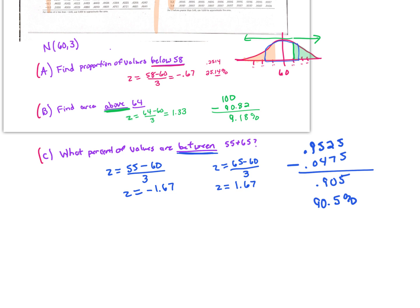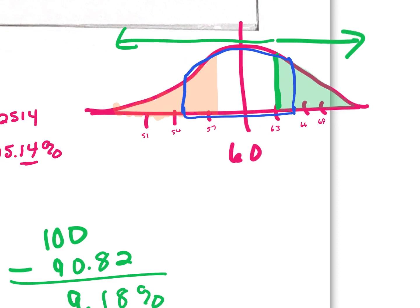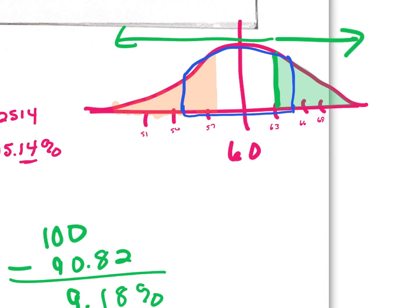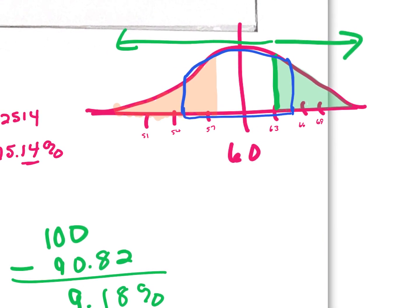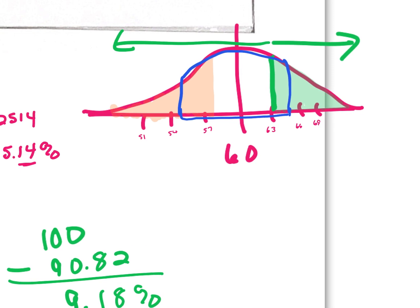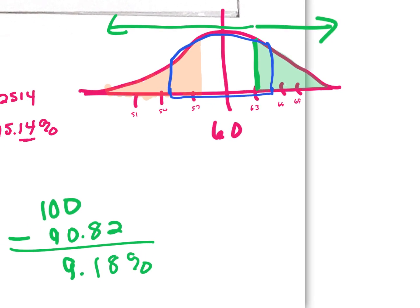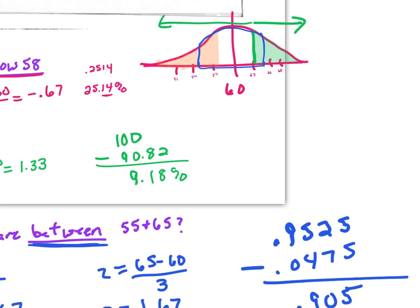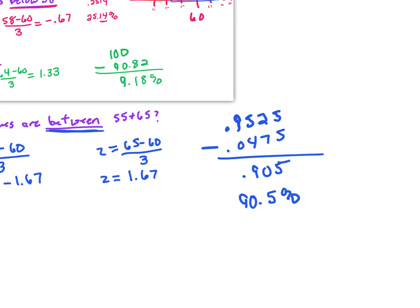That gives us 0.905, or 90.5%. That should make sense — we are almost two standard deviations above and below the mean, and through the empirical rule we know that would be approximately 95% of the data. So 90.5% is quite accurate.